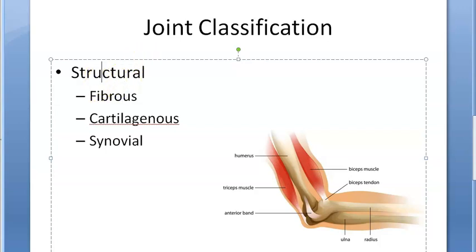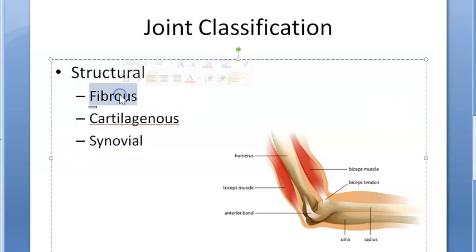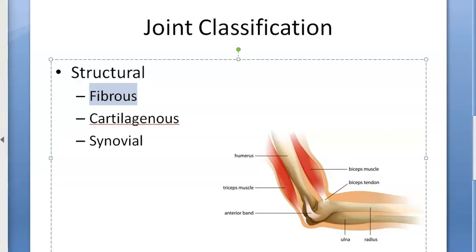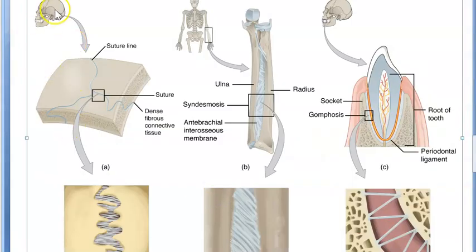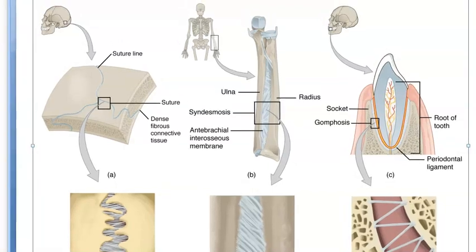You have structural classification. You have fibrous joints, cartilaginous joints, and synovial joints. Fibrous joints - like your skull, you have some sutures, syndesmosis, gomphosis. These are the types of fibrous joints. They will not allow that much movement. Your sutures in your skull have the suture as a fibrous joint - they will not allow much movement. Synarthrosis, they are calling it.